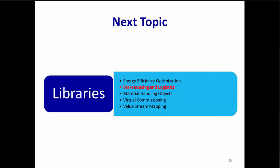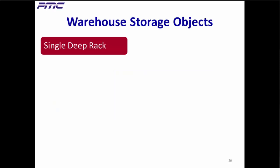Our next topic: the Warehousing and Logistics Library provides numerous objects that slash the time required to build, analyze, and optimize a warehouse model. Visualization includes informative 2D icons and realistic 3D icons. For example, the library provides several storage objects that provide detailed modeling of various storage objects commonly found in warehouses.